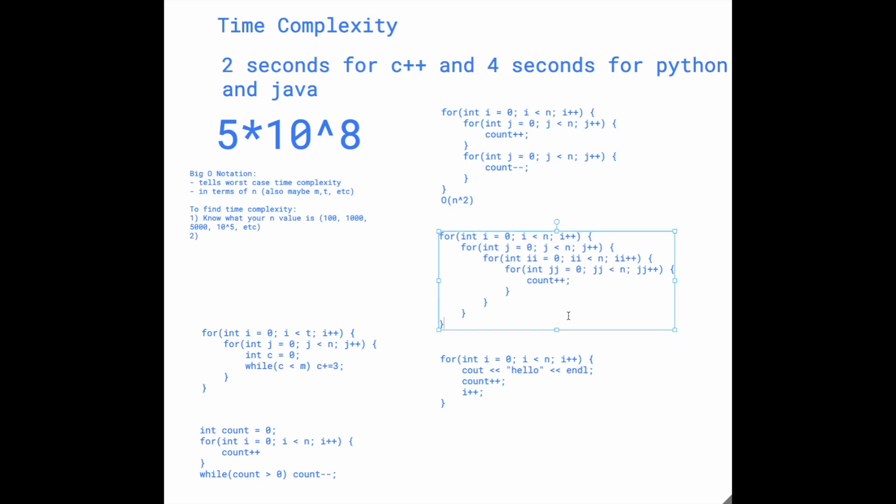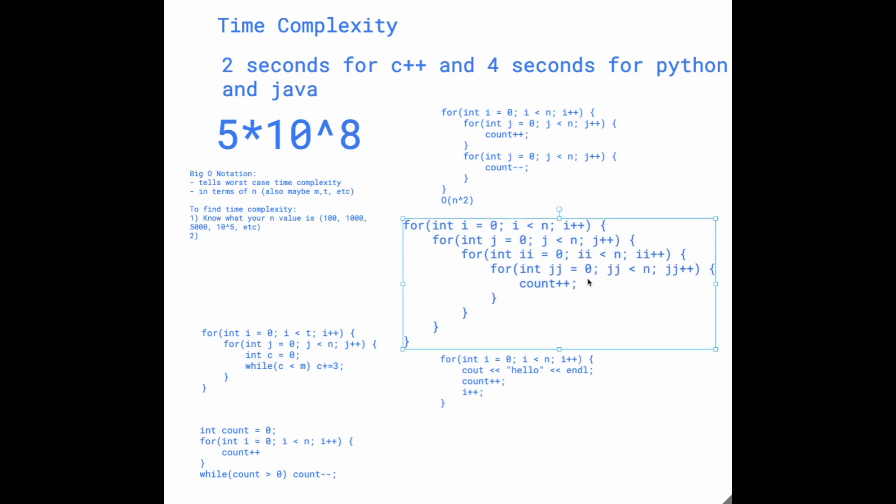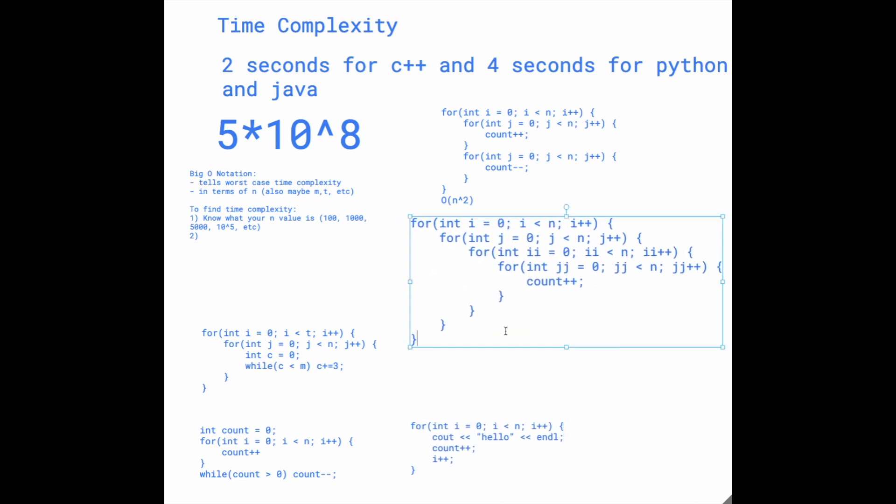Let's take a look at the second one and you can take a moment to pause. If we take a look, we have an outer for loop of n, so O of n, and then another one of n, and another one of n. What we have is O of n to the fourth. This one is relatively simple. It's just four nested for loops that each run n times.